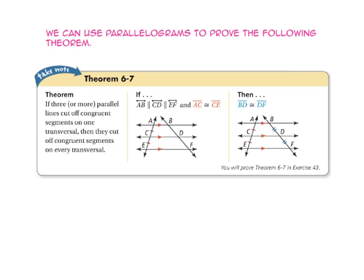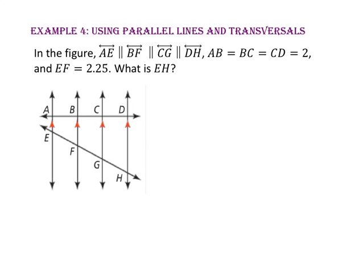We can use parallelograms to prove the following theorem: if three or more parallel lines cut off congruent segments on one transversal, then they will also cut off congruent segments on the other transversal. So since line AB is parallel to line CD, which is parallel to line EF, and segment AC is congruent to segment CE, then segment BD will be congruent to segment DF.